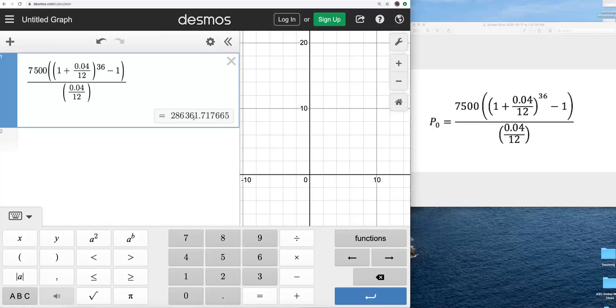That's 286,361. If we're rounding to the nearest hundredth or the nearest cent, it would be 0.72. And that's it. That's how easy it is to use Desmos as a scientific calculator.